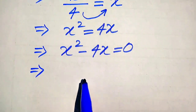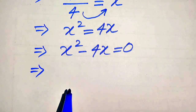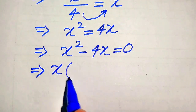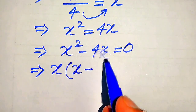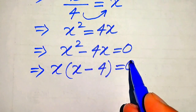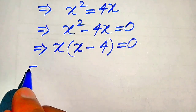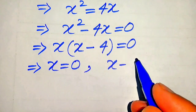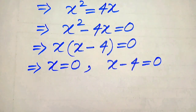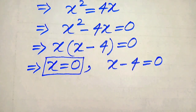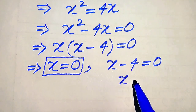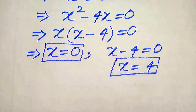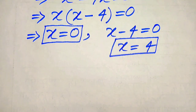We can easily solve this quadratic equation for the values of x. Since x appears in both terms, we take common factor x from both terms: x(x − 4) = 0. We split into two cases: the first case is x equals 0, and the second case is x minus 4 equals 0. Moving the −4 to the right hand side gives x equals 4. So we get these two roots of the given equation.